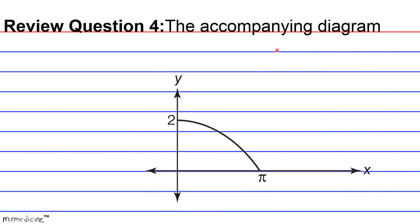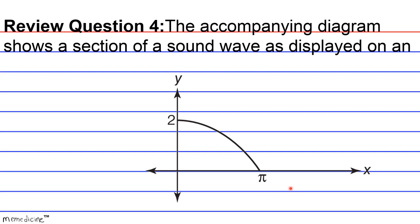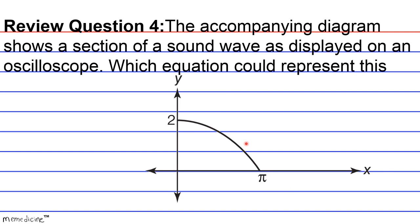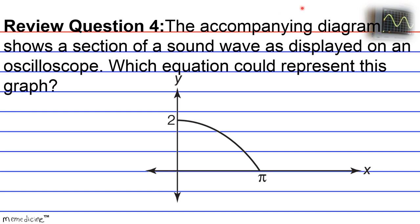Review Question 4. The accompanying diagram shows a section of a sound wave as displayed on an oscilloscope. For those wondering what an oscilloscope is, it's basically a device for viewing oscillations — here's a short picture of one. Which equation could best represent this particular graph?